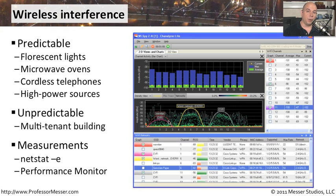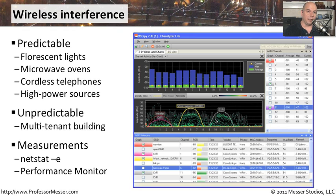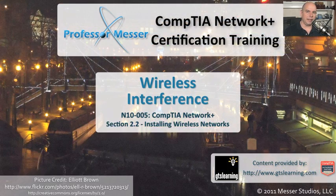A more advanced way to look for these types of problems is with something like a spectrum analyzer, which looks at the entire frequency range and graphs every signal and noise it sees at each particular frequency. This allows you to map out where your access points are, and more importantly, see if there are other things out there in that frequency range that might be causing interference for your wireless network.